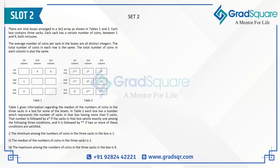In this dataset, nine boxes are arranged in a three-by-three array. Each box contains three sacks, and each sack has a certain number of coins between one and nine. The average number of coins per sack in the boxes are all distinct integers. The total number of coins in each row is the same, and the total number of coins in each column is also the same. Table one gives the median number of coins in each sack for some boxes.